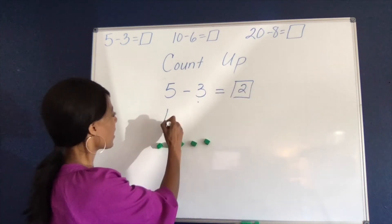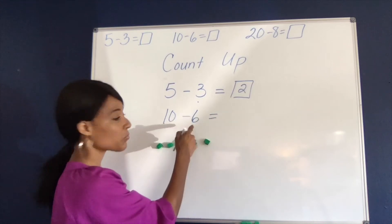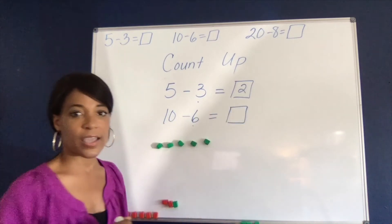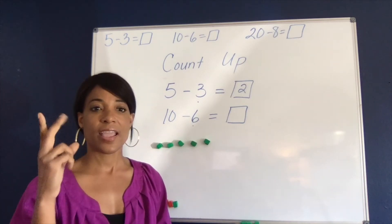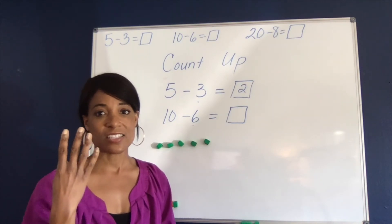If I have 10 and I want to subtract 6, I can start with the number 6 and count up to find the difference between those two numbers. So 6, after 6 comes 7, 8, 9, and 10. There I have 4 fingers and the answer is 4.